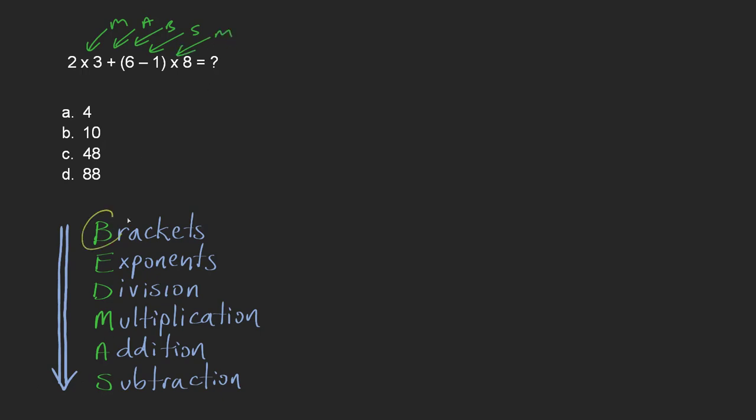And so dealing with the brackets first, inside of the brackets we have subtraction. So we're going to do brackets and subtraction when we figure out the next step after 2 times 3 plus, brackets, 6 minus 1 times 8. So we're dealing with this part, the brackets that include the subtraction. So 6 minus 1 is 5. The rest of it I'm just going to leave alone.